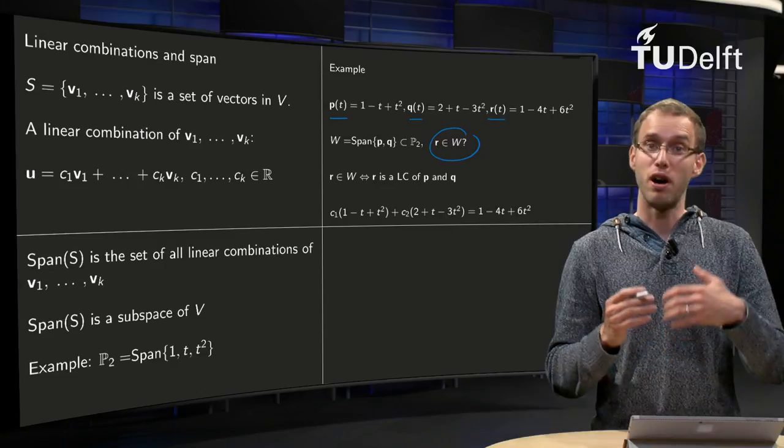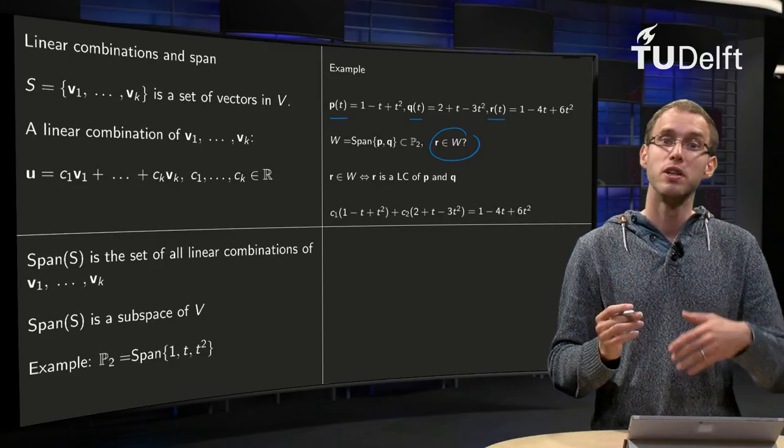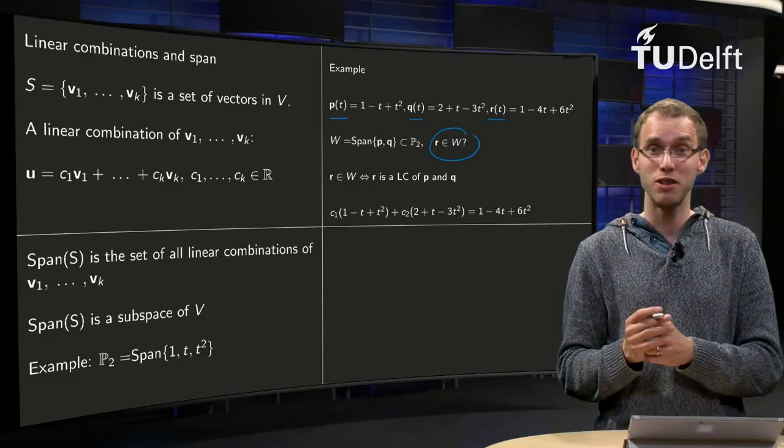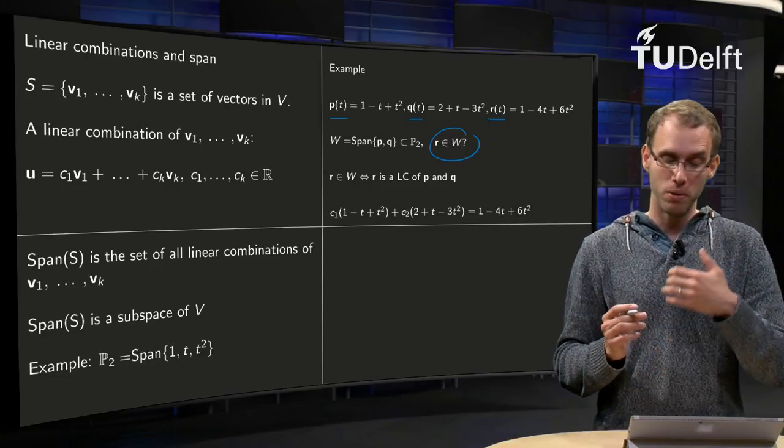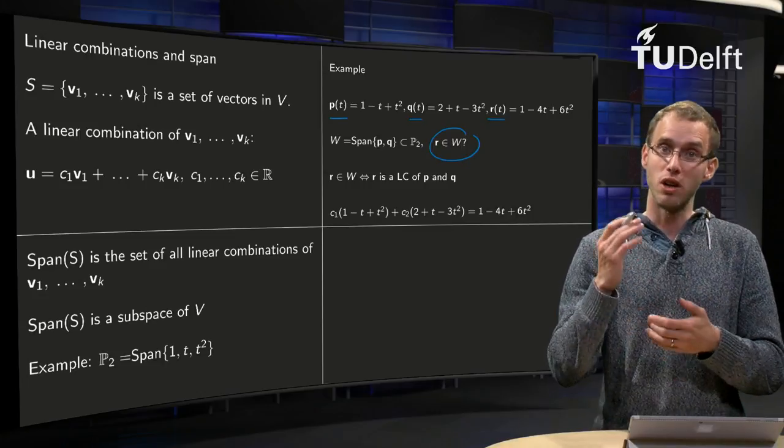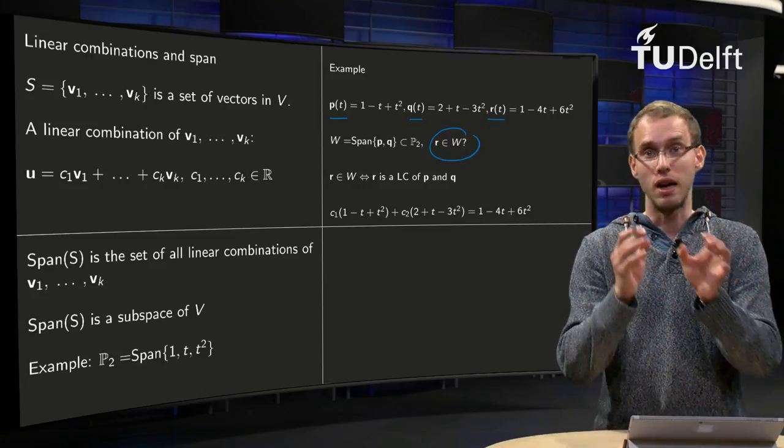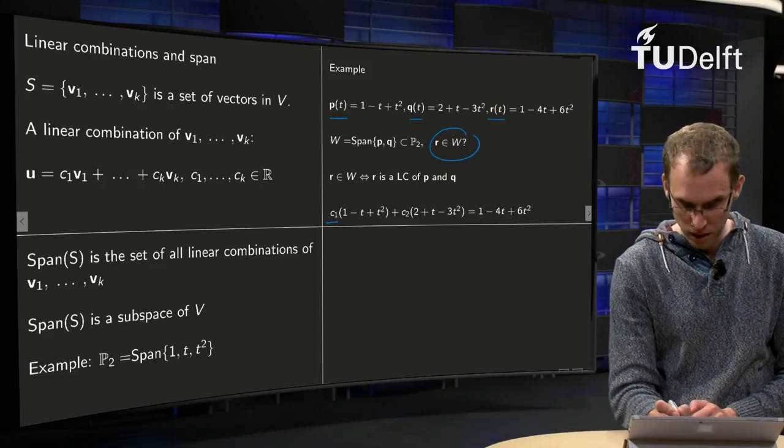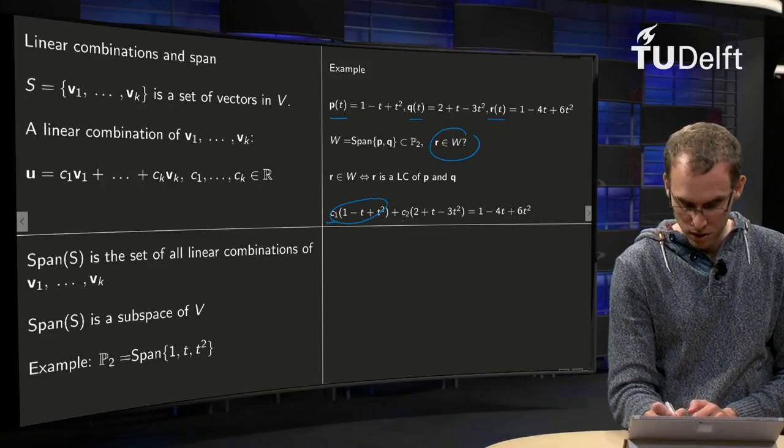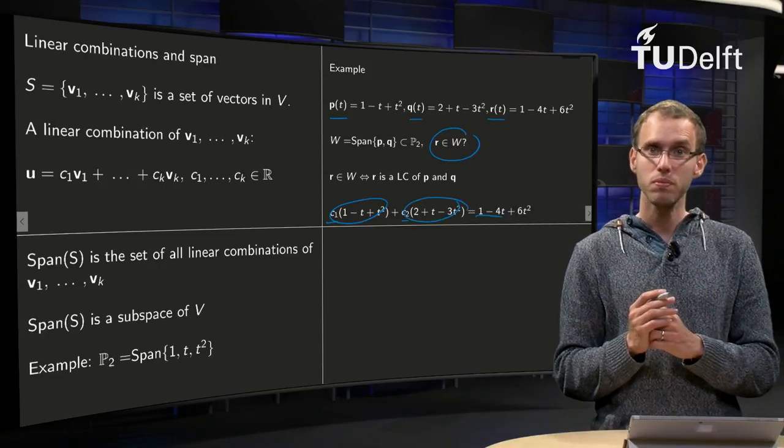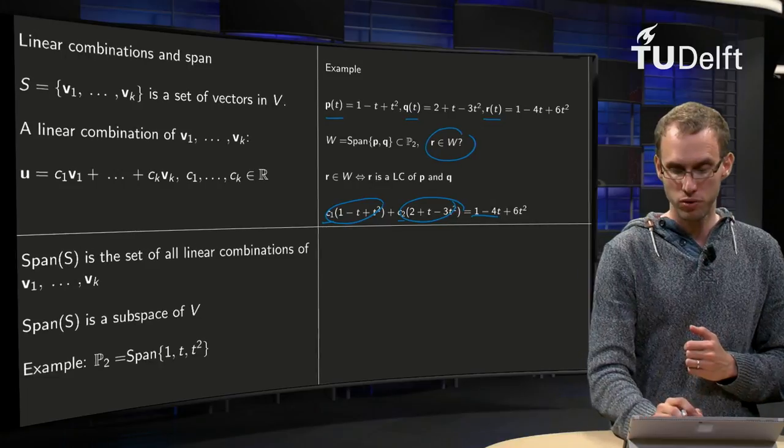Well, R is in W if R is in the span of P and Q. So that means we need to find weights C1 and C2 such that R equals C1 times P plus C2 times Q. How can we find such weights?